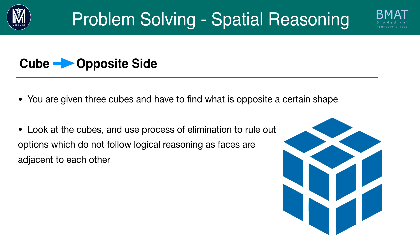The first type of question you can get, as I described, is a cube to an opposite side question. Here, you will be given three cubes and you will be asked to find what is opposite a certain shape. You should look at the cubes you have been presented with and use the process of elimination to rule out any options which do not follow logical reasoning as the faces are adjacent to each other. In essence, the same cube will be shown in three different views and you'll have to try and figure out what the missing face is.